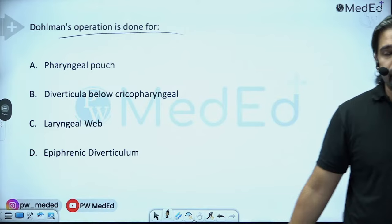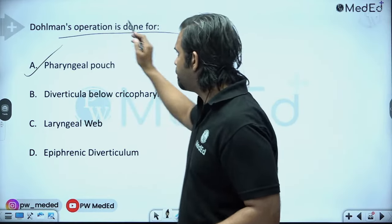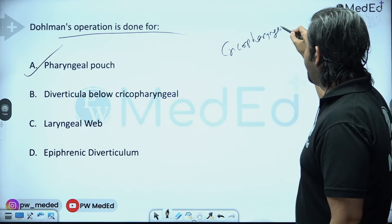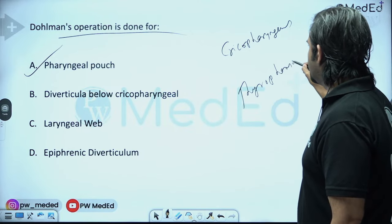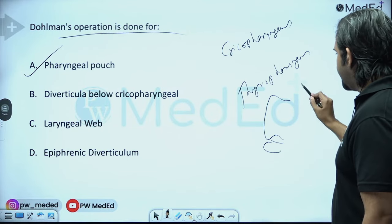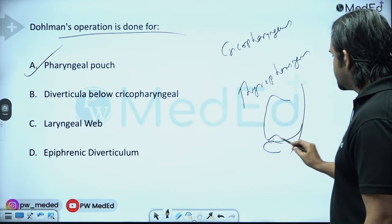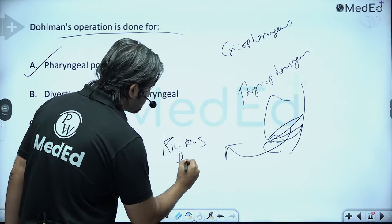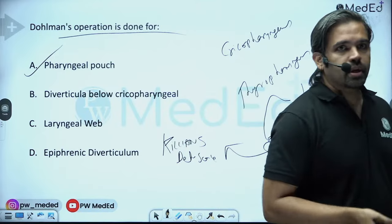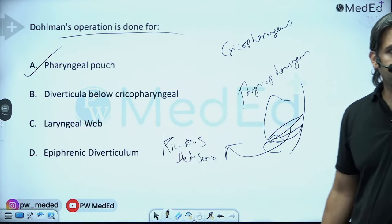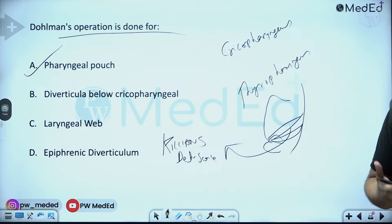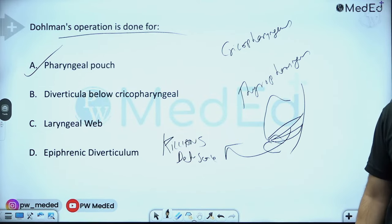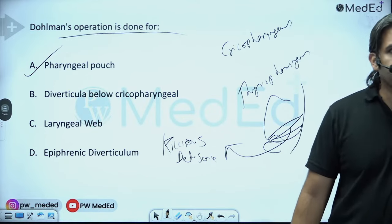Dolman's operation is performed for pharyngeal pouch. Between the cricopharyngeus muscle and thyropharyngeus muscle lies a weak space called Killian's dehiscence. Through this space, a Zenker's diverticulum or other laryngeal protrusions can herniate — often from excessive trumpet blowing or occupations requiring high airflow. Dolman's operation repairs this weak area.